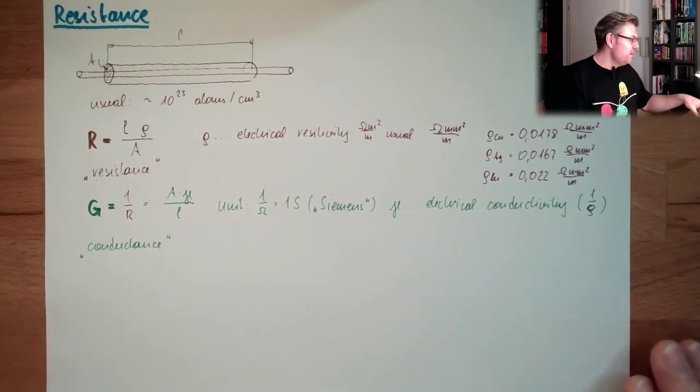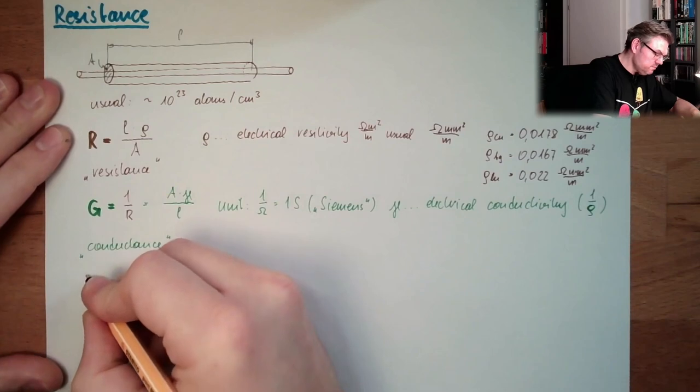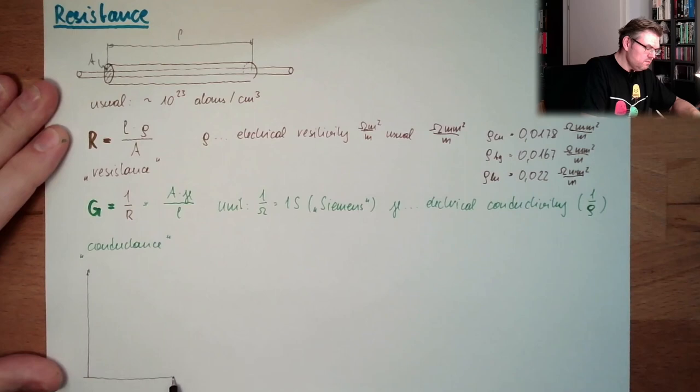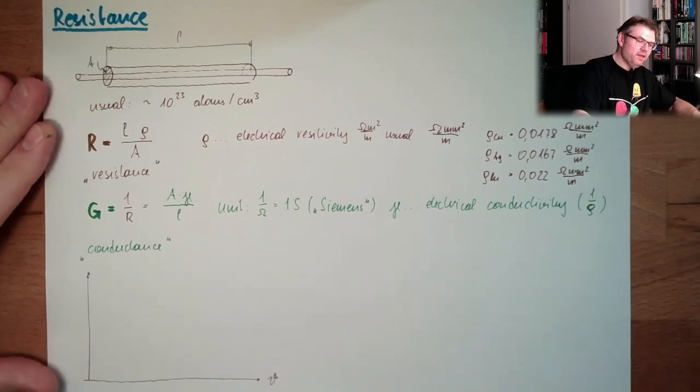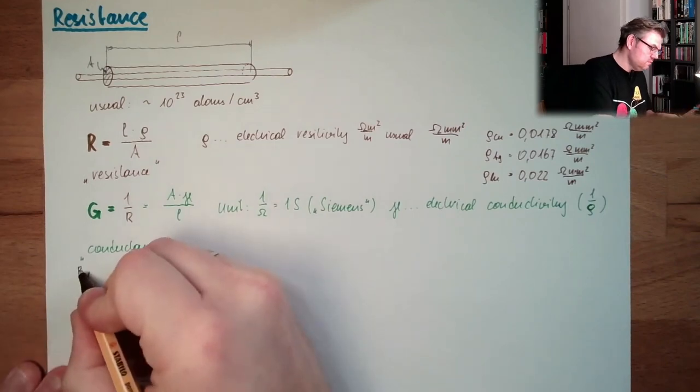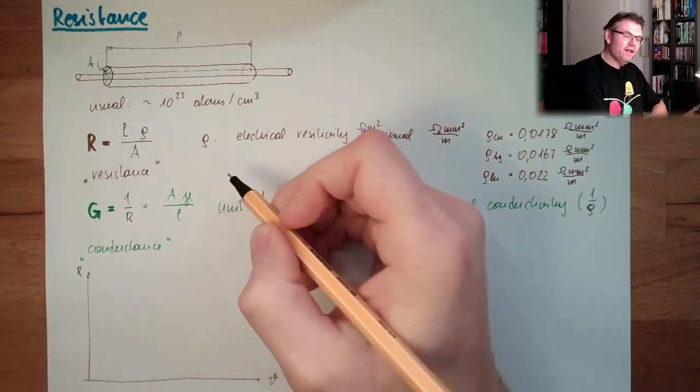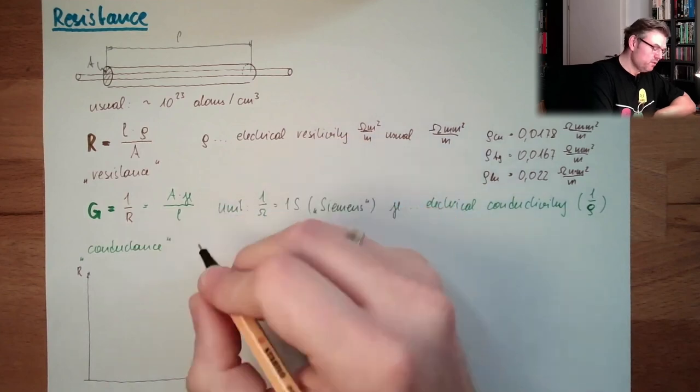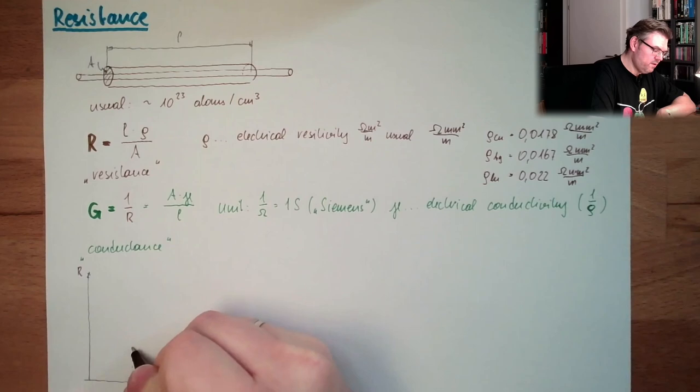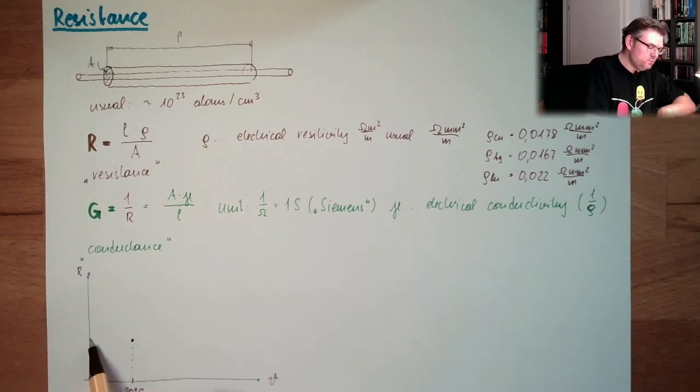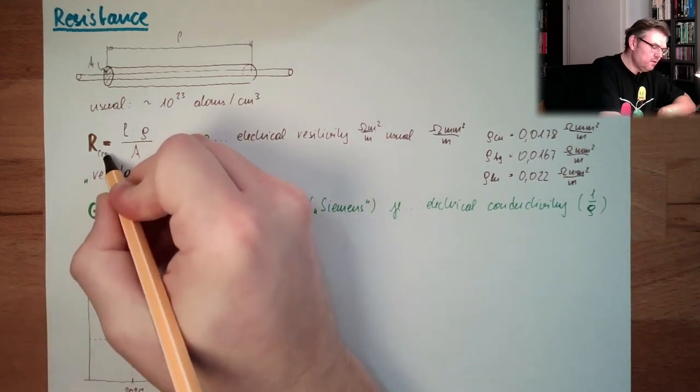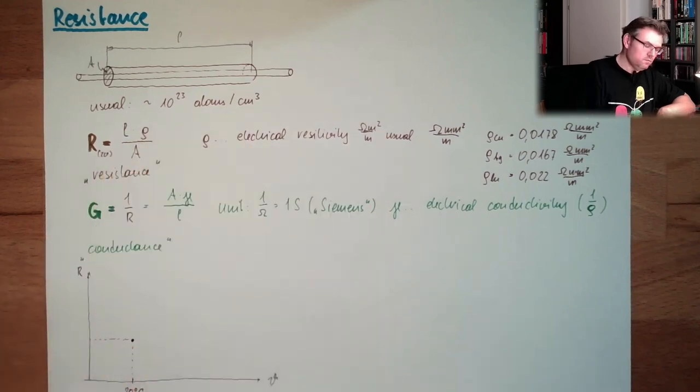So actually, if we take a look. Here is the temperature, theta. Here is the resistance, r. Then what we calculated here is usually given by 20 degrees Celsius. We have a certain amount of resistance. This is what we calculated here. This is this r20. All right?